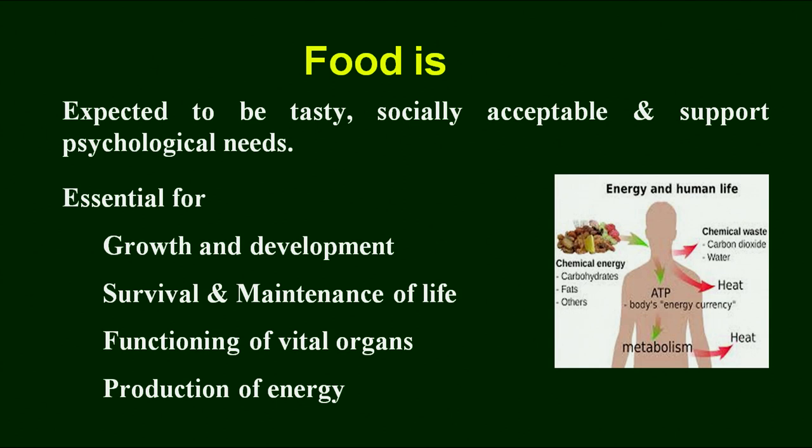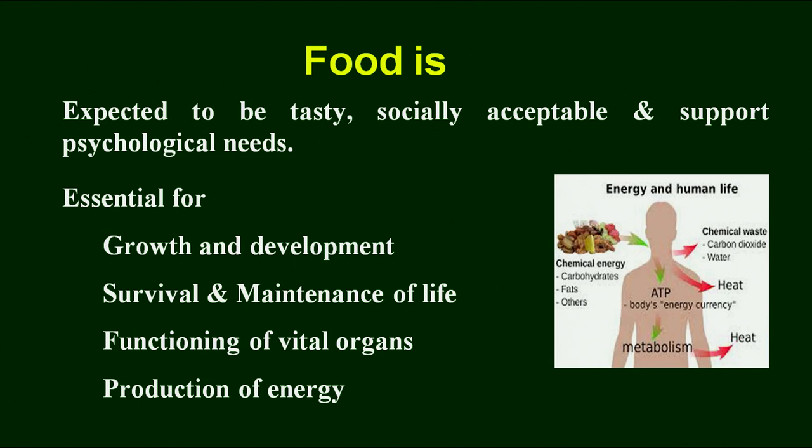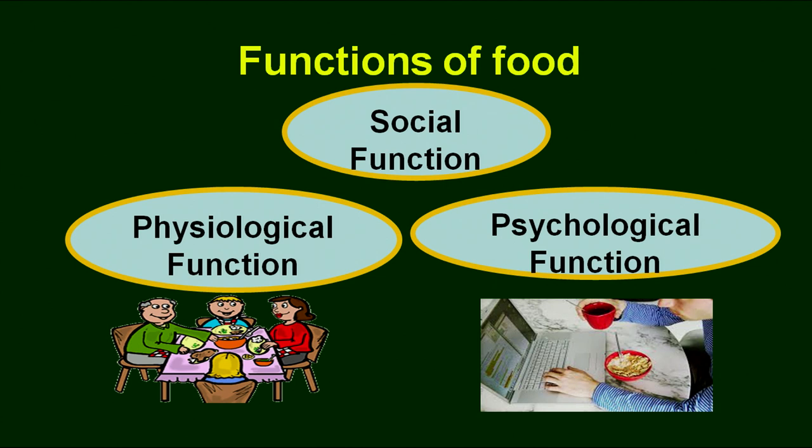When we choose any food, first we see whether it is tasty or not, whether it is socially acceptable, and whether it supports psychological needs — whether I feel happy or I do not like that particular food. But when we deeply understand the functions of food, we find that food is essential for growth and development, survival and maintenance of life, functioning of vital organs, and production of energy. We have divided the functions of food into three categories: social functions, physiological functions, and psychological functions.